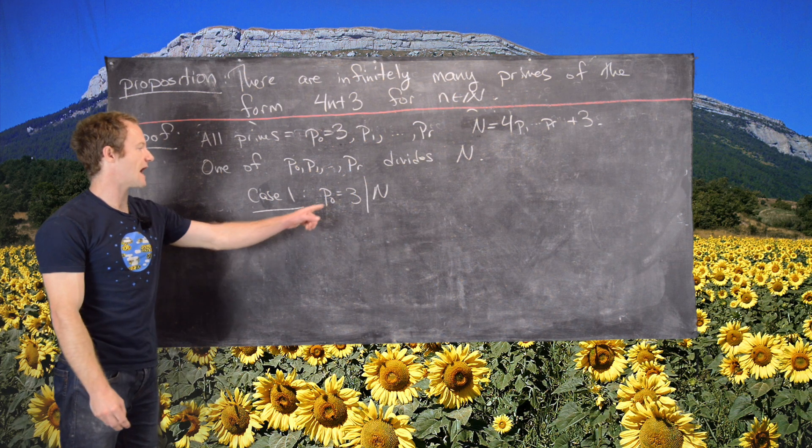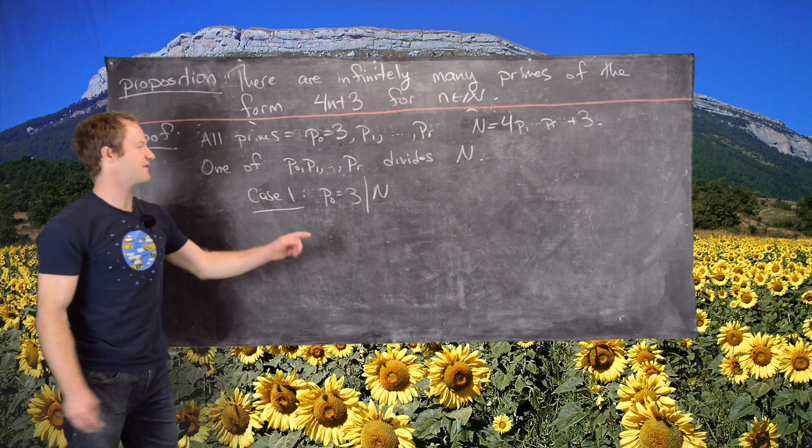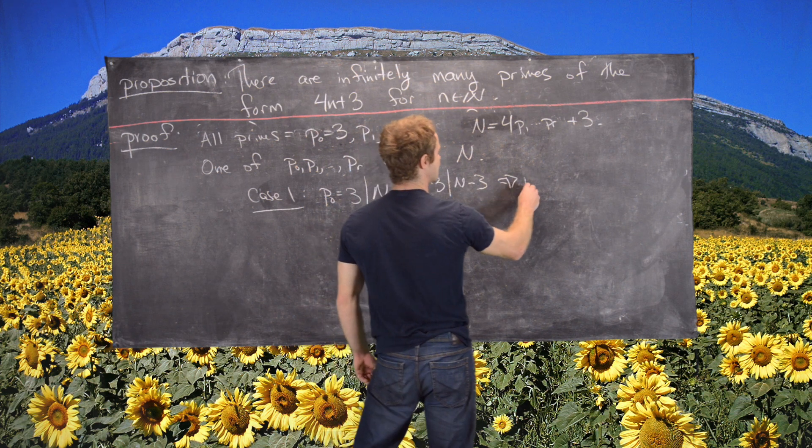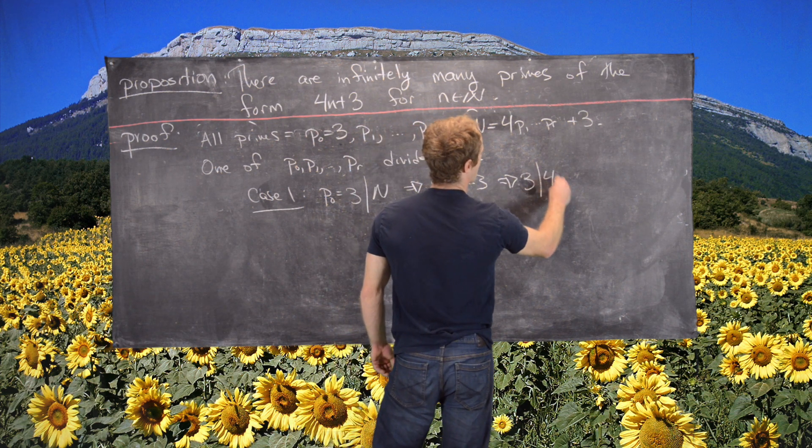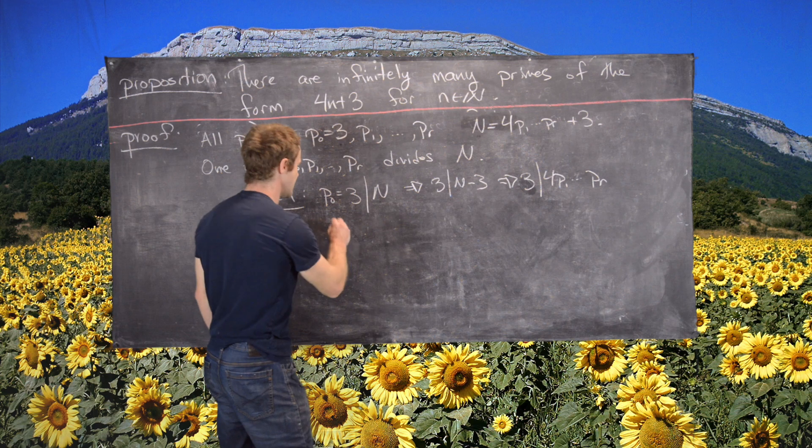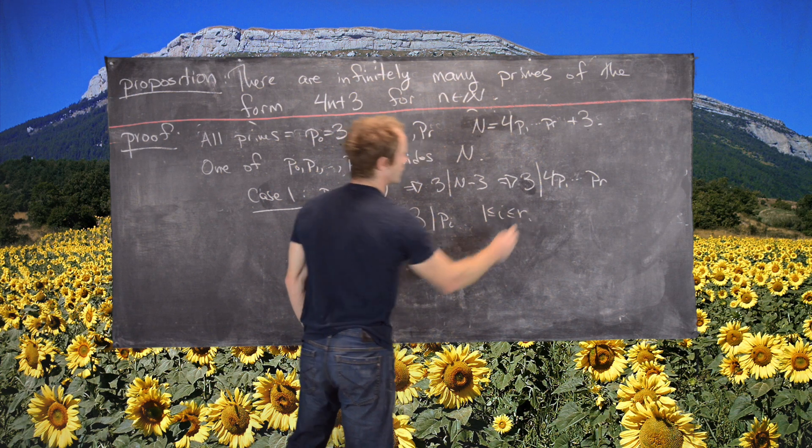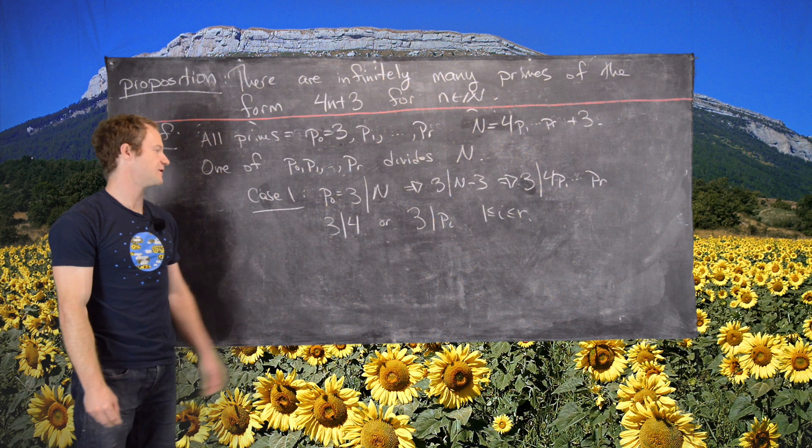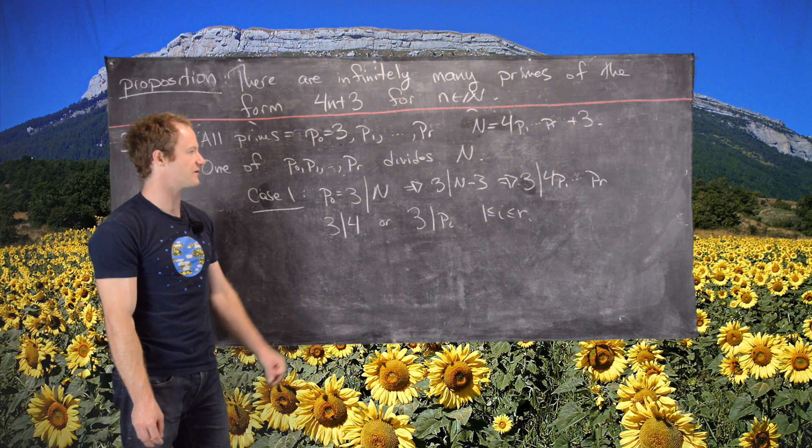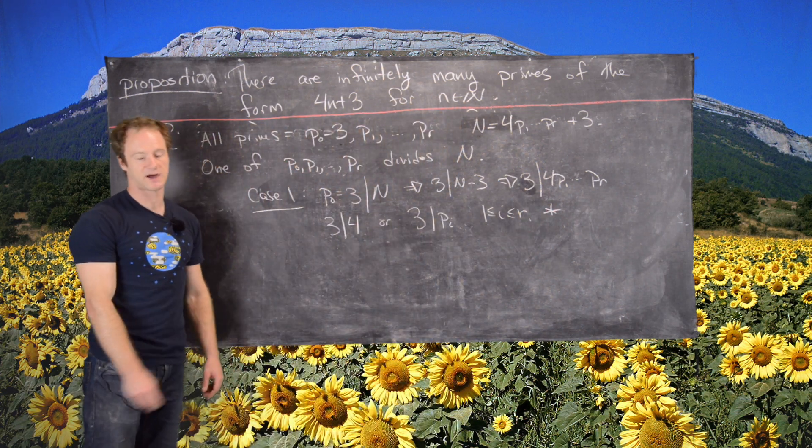But now notice that if 3 divides n, then since 3 also divides 3, that tells you that 3 divides n minus 3. So this means 3 divides n minus 3. But notice that n minus 3 is 4, P1 up to PR. So that means 3 divides 4 or 3 divides PI for some i between 1 and r. And both of those are impossible. Obviously, 3 doesn't divide 4. And since all of these primes are different and they're primes, so they have no divisors other than themselves and 1, so that makes this statement as well impossible.